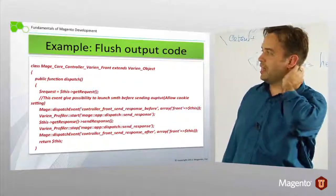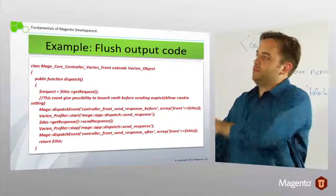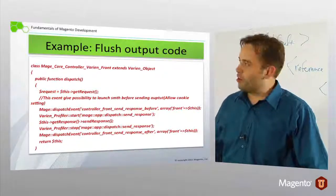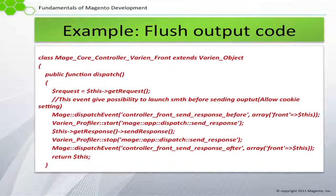How does that happen? We're using our front controller, mage core controller varien front. Here we're getting our request object—we remember dispatch from earlier today. Here we're getting our response object.